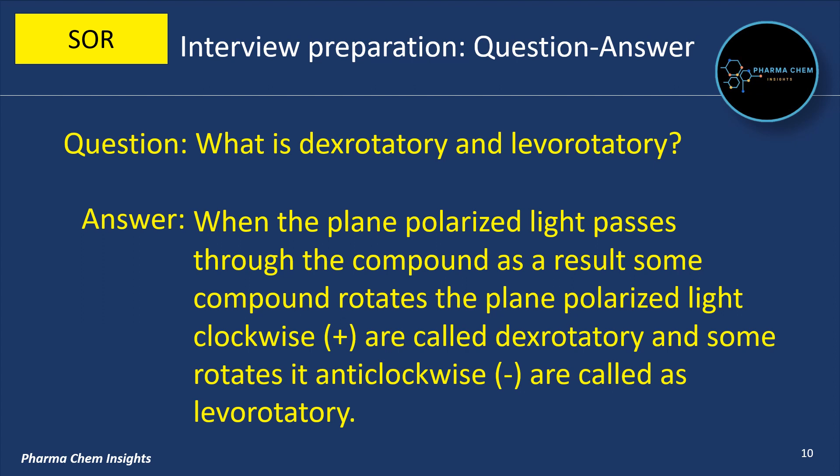What is dextrorotatory and levorotatory? When the plane polarized light passes through a compound, some compounds rotate the plane polarized light clockwise (plus) and are called dextrorotatory, and some rotate it anticlockwise (minus) and are called levorotatory.